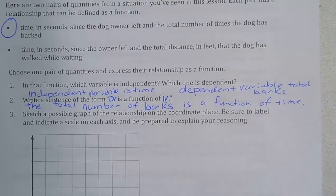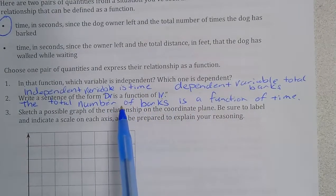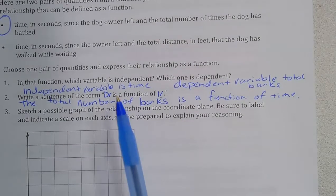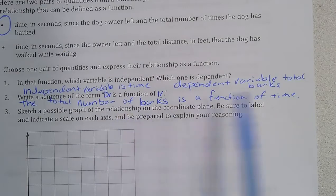And what that means is the number of barks is going to depend on the time. So the longer the time is, the longer number of times the dog would have barked. And that's going to vary based on the dog. Some people would have a dog that barks a lot. Some people's dog might not bark at all.